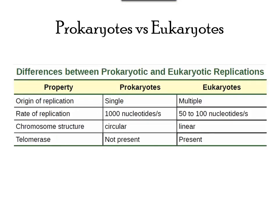In this chart, we can see the differences between prokaryotic and eukaryotic replication. Prokaryotic cells have a single origin of replication, while eukaryotes have multiple. The rate of replication is also different between the two. Prokaryotes have a circular chromosome structure, while eukaryotes have a linear chromosome. Lastly, telomeres are only present in eukaryotic cells.